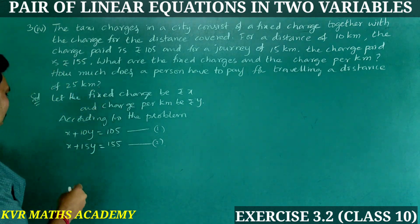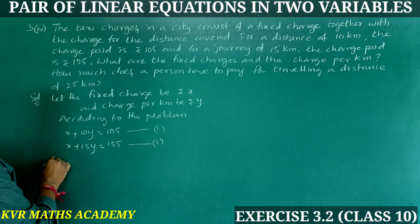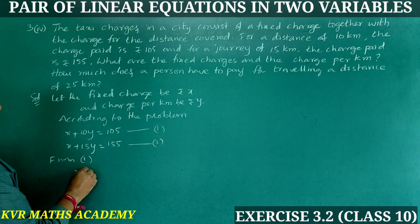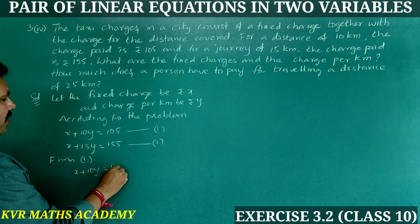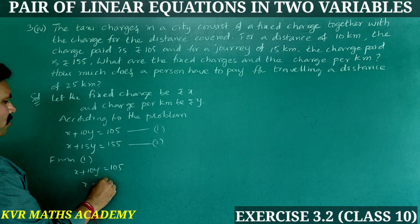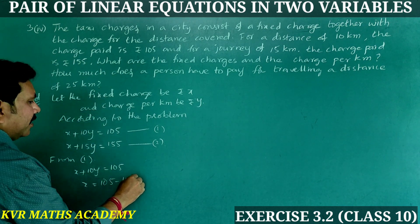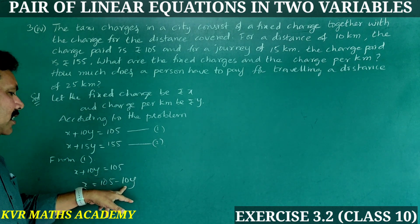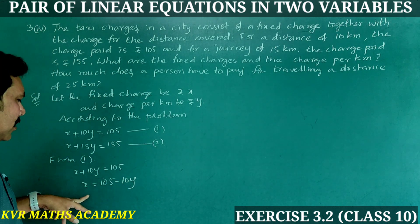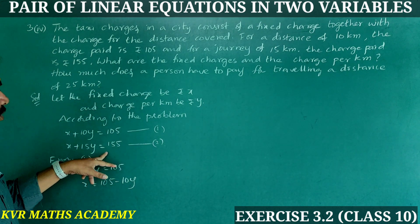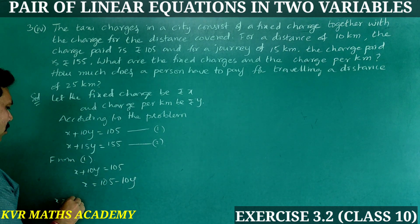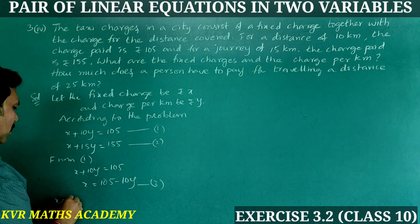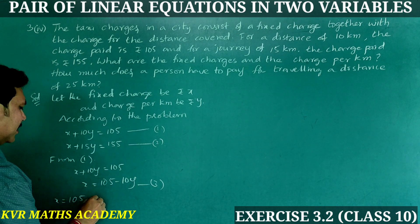Using the substitution method. From equation 1: X + 10Y = 105, so X = 105 minus 10Y. Transfer 10Y to this side, giving minus 10Y. So X = 105 minus 10Y. This is equation 3. Now substitute equation 3 into equation 2.